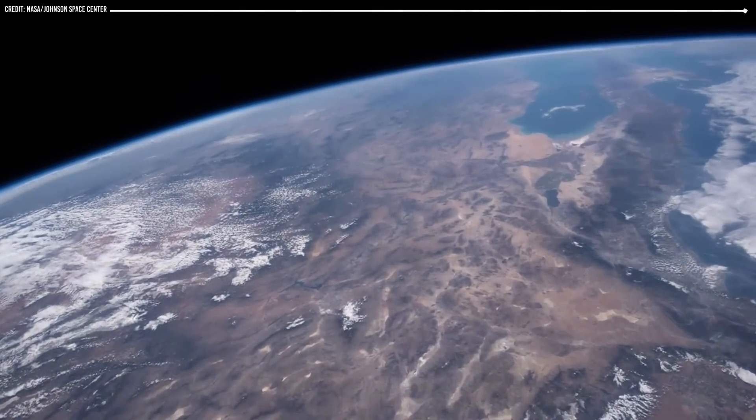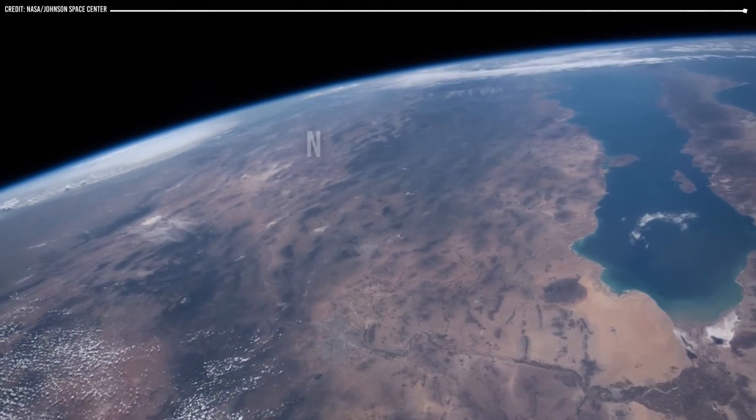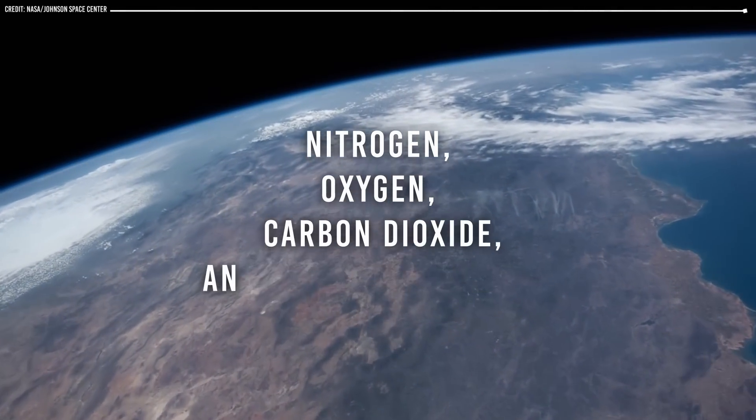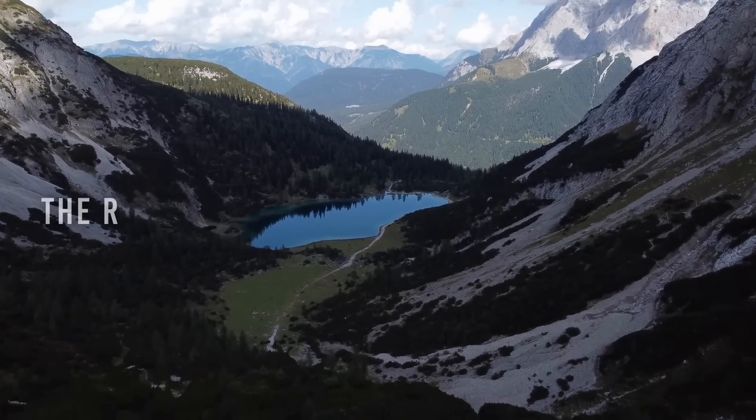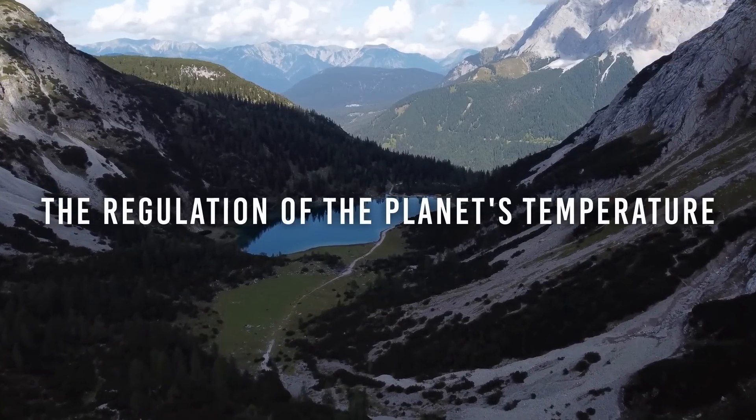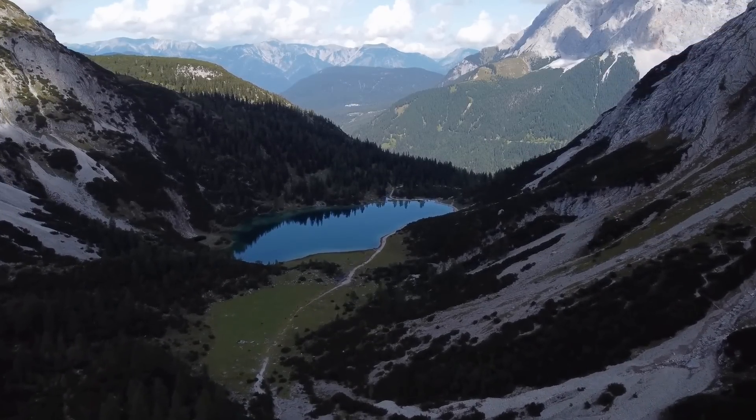The Earth's atmosphere is composed of a mix of gases, including nitrogen, oxygen, carbon dioxide, and other trace gases. This mix of gases has allowed for the regulation of the planet's temperature, as well as providing the necessary ingredients for life.